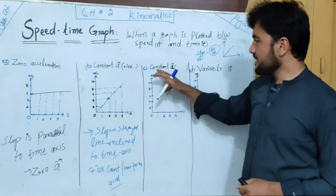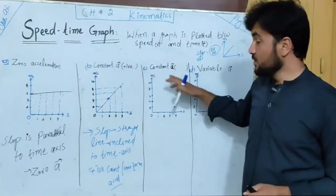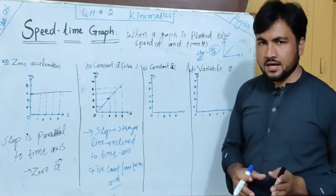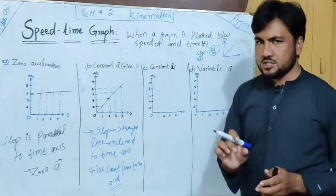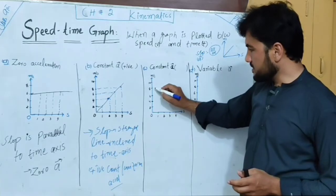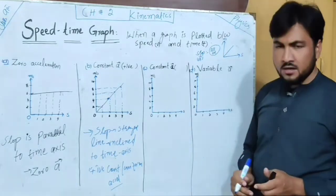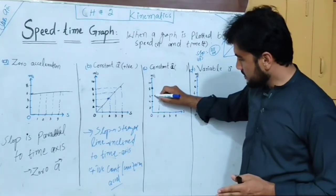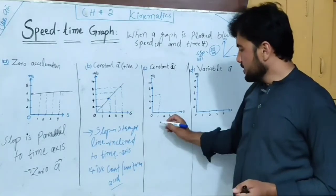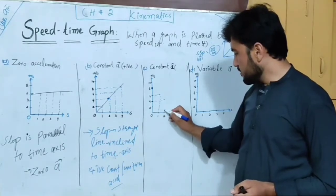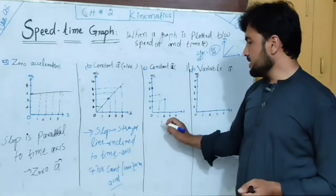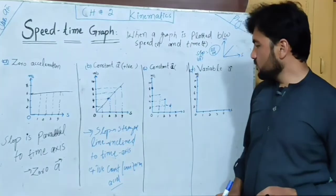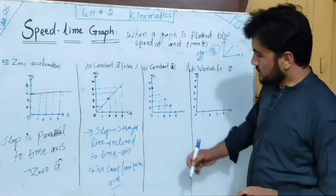The same situation: now the speed is 8 meters per second. Under another condition, the speed decreases — it comes down to 6 meters per second. The speed is 8 meters per second, and in 2 seconds it decreases by 2 meters per second. Similarly, the speed decreases by 2 meters per second each interval until it reaches 0 meters per second.